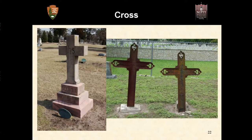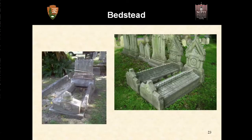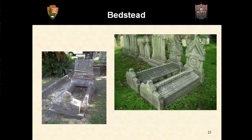Another common grave marker is the cross — it can be stone, wood, iron, or bronze. Then there are bedsteads, a Victorian idea that literally looks like a bed: a headboard, footboard, side rails, and often a flower bed in the middle. When doing documentation, you might want to check back in a couple of seasons to see if any flowers come back. Heirloom plants we don't see much anymore will often come back in cemeteries, frequently in the middle of these bedsteads where they were originally planted.